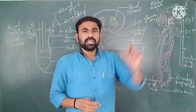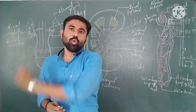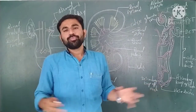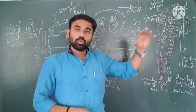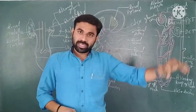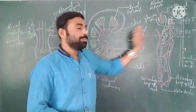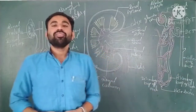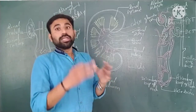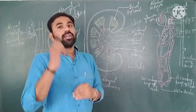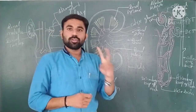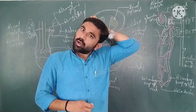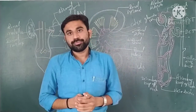The second type is the juxtamedullary nephron. The only difference is that the loop of Henle is very long and extends deep into the medullary region. That is why it is called the juxtamedullary nephron. So nephrons are of two types: cortical nephron and juxtamedullary nephron.